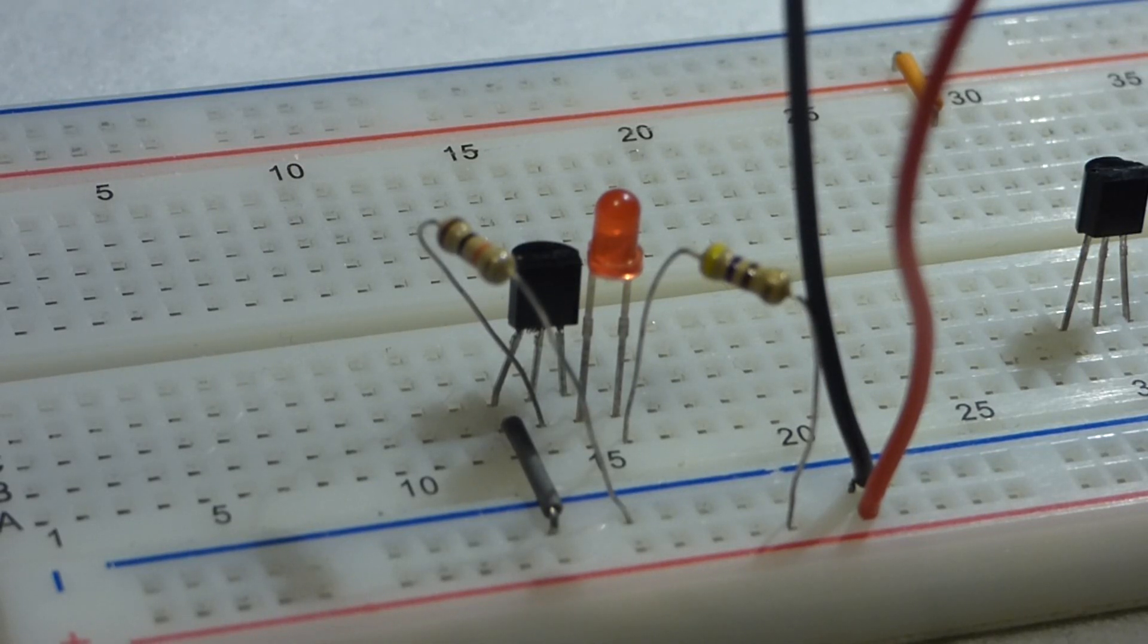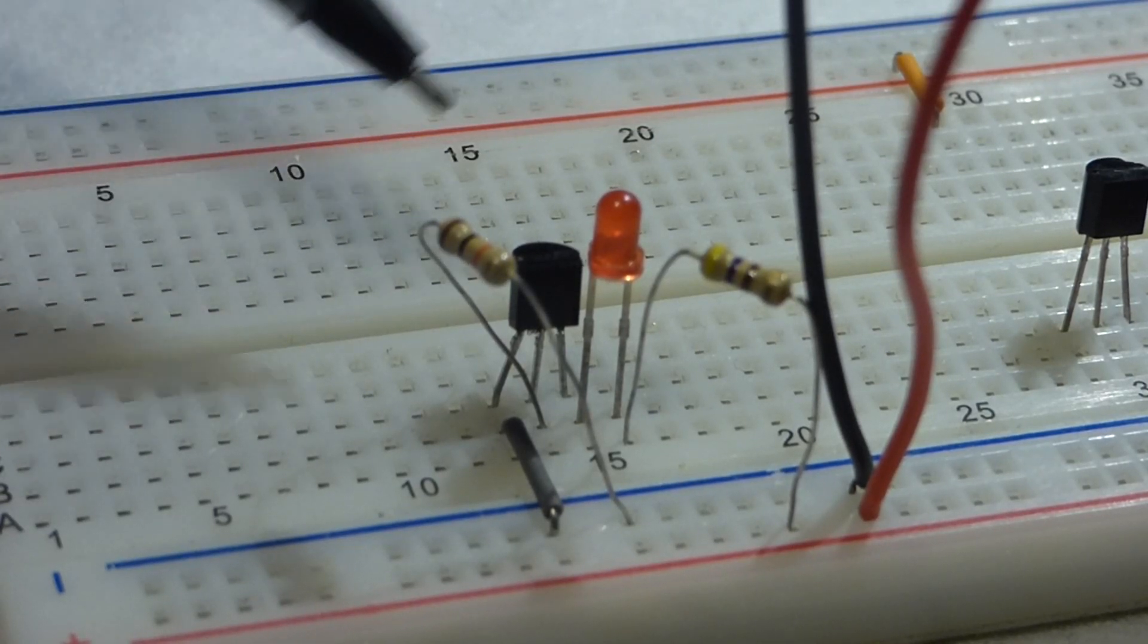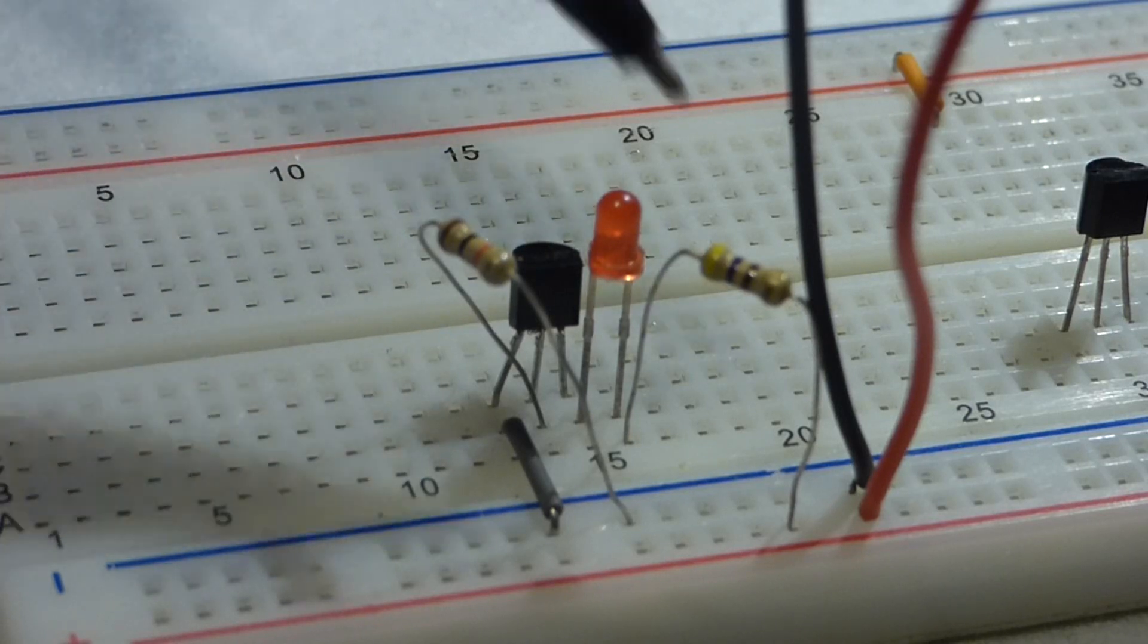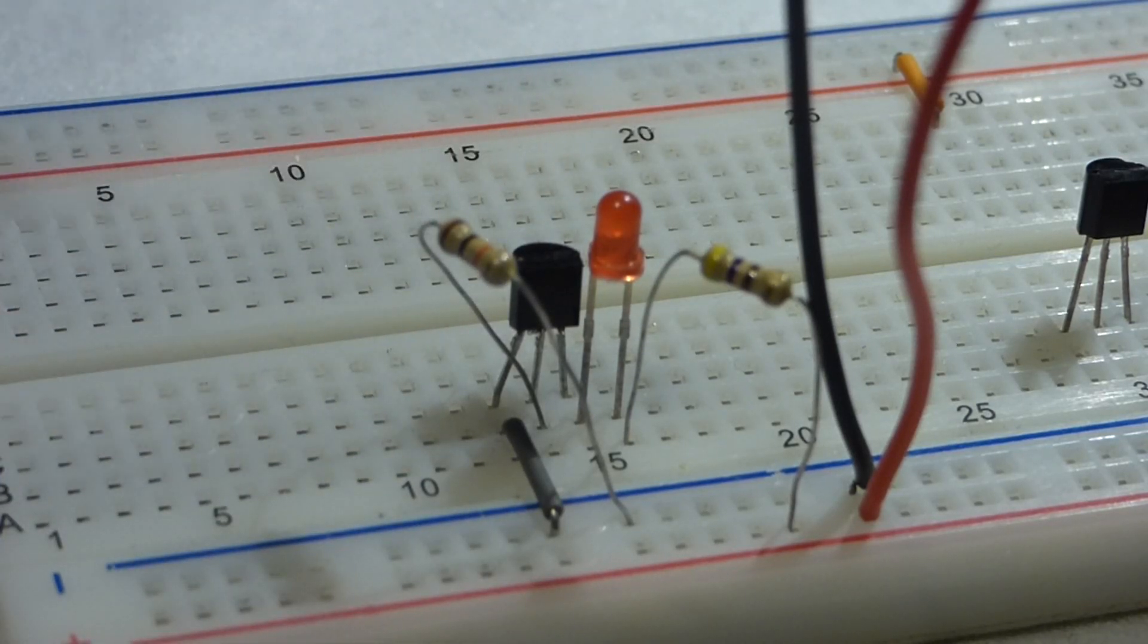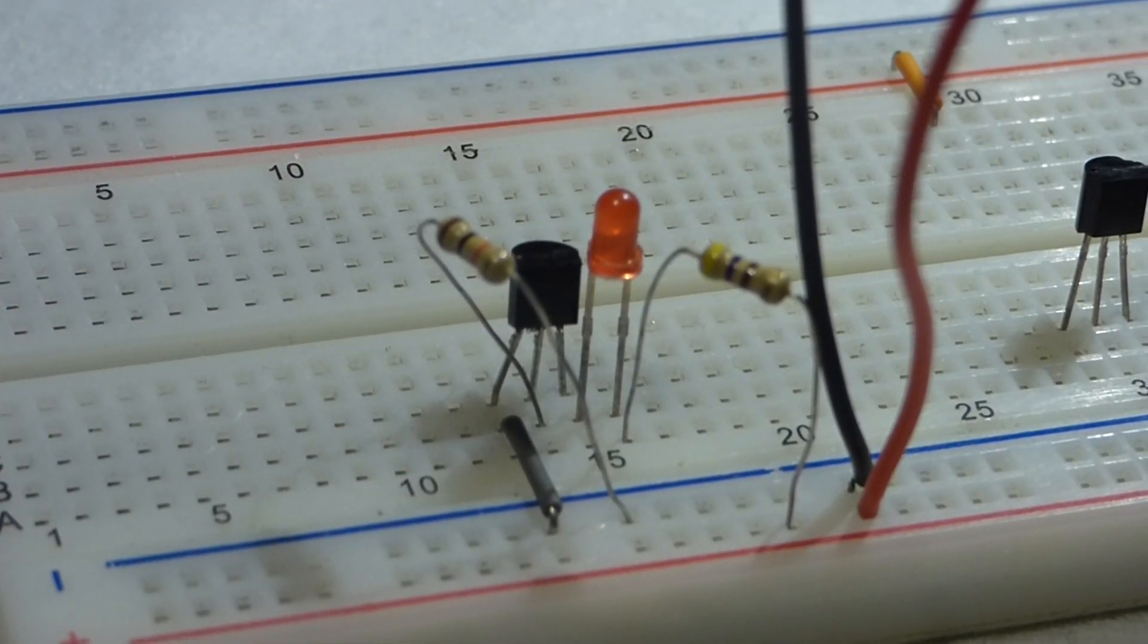But, remember, transistors have two current paths. One from the base to the emitter, and then the other one from the collector to the emitter. And, the emitter shares both of those paths. So, ultimately, they end up at the emitter. And, when you look at the transistor schematic, you'll see an arrow. That's pointing the direction that the current flows when it's conducting.